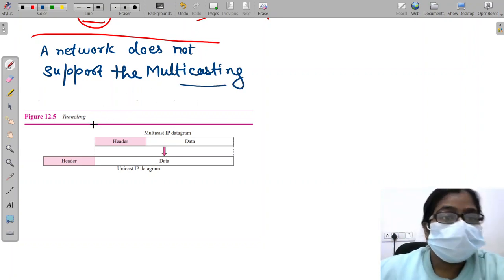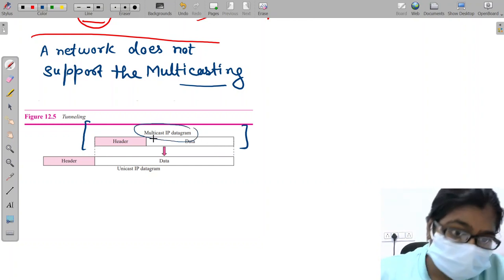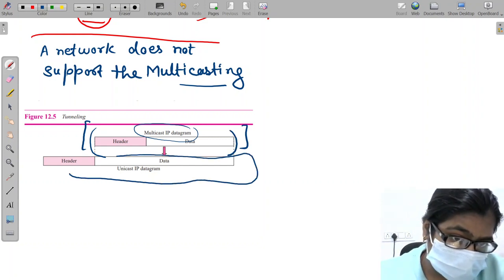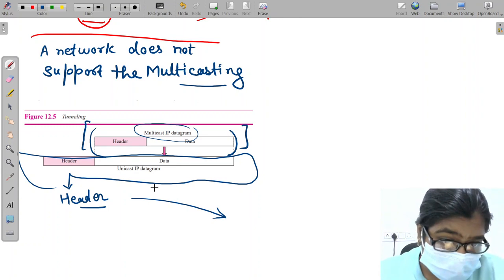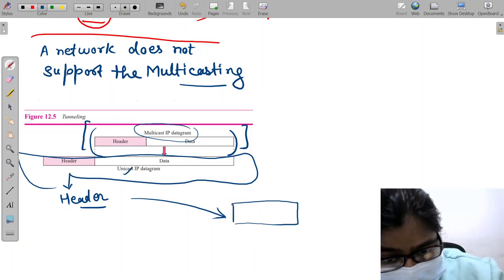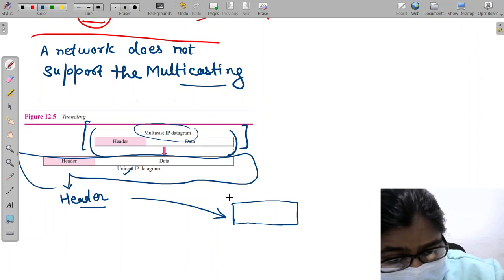Then what we will do is we will use this tunneling system. This was the multicast IP address. We will encapsulate it inside a unicast IP datagram and assign the new header, and then it will be sent as unicasting through the network. But when it reaches its destination, it will be decapsulated and will be received in the form of the multicast IP address.